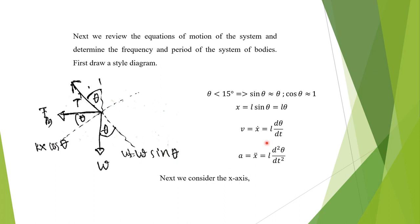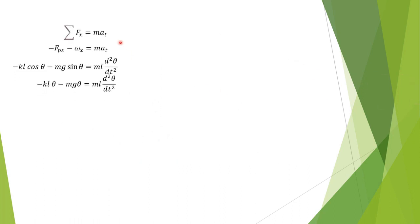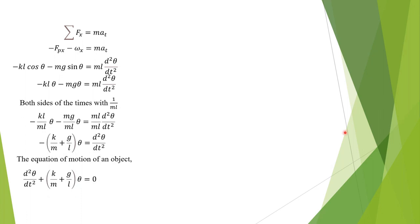x double-dot equals l times d²theta/dt². Next we consider the x-axis. You can look at the equation — I will not explain in detail. If you look the video, you can pause the video to look at the equation. This is a short time. Both sides of the equation divided by the angle.